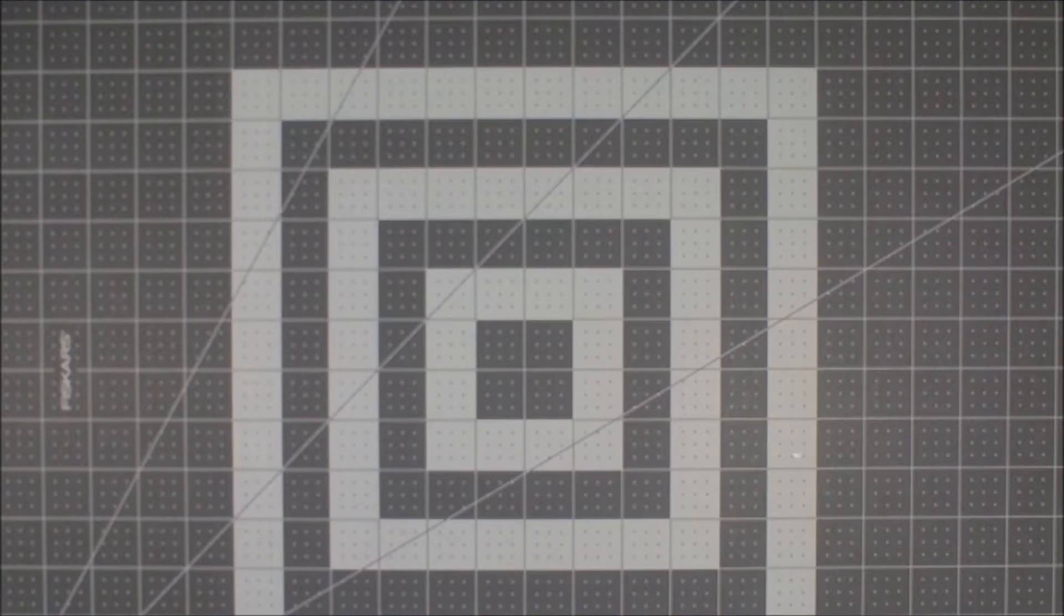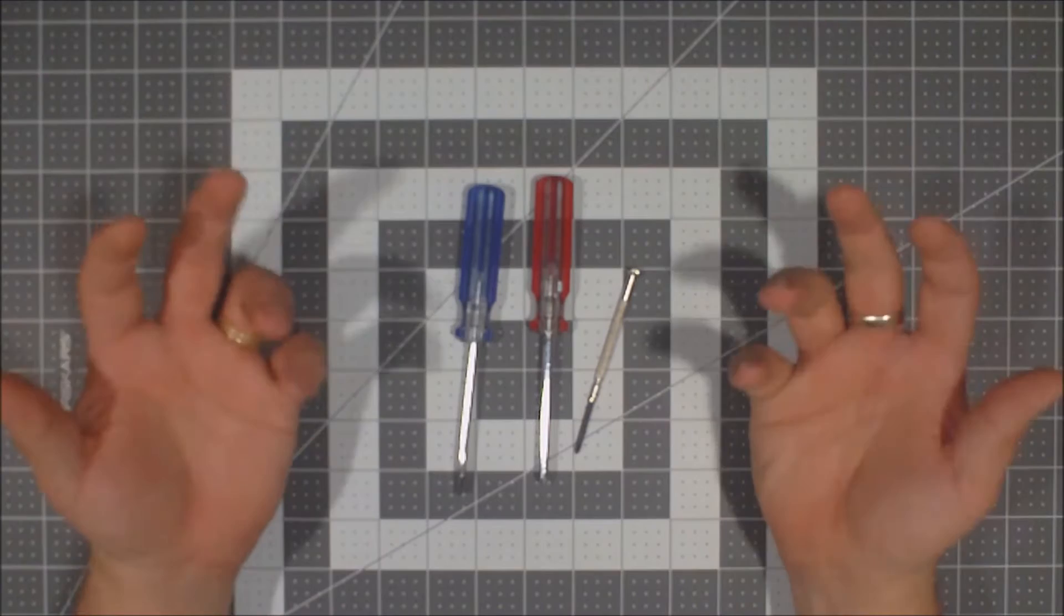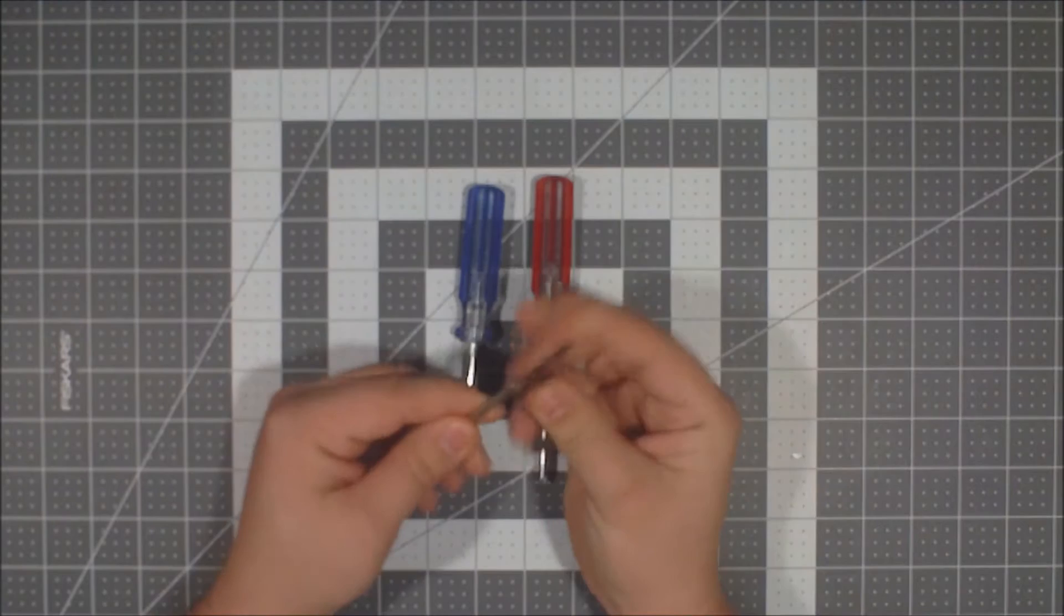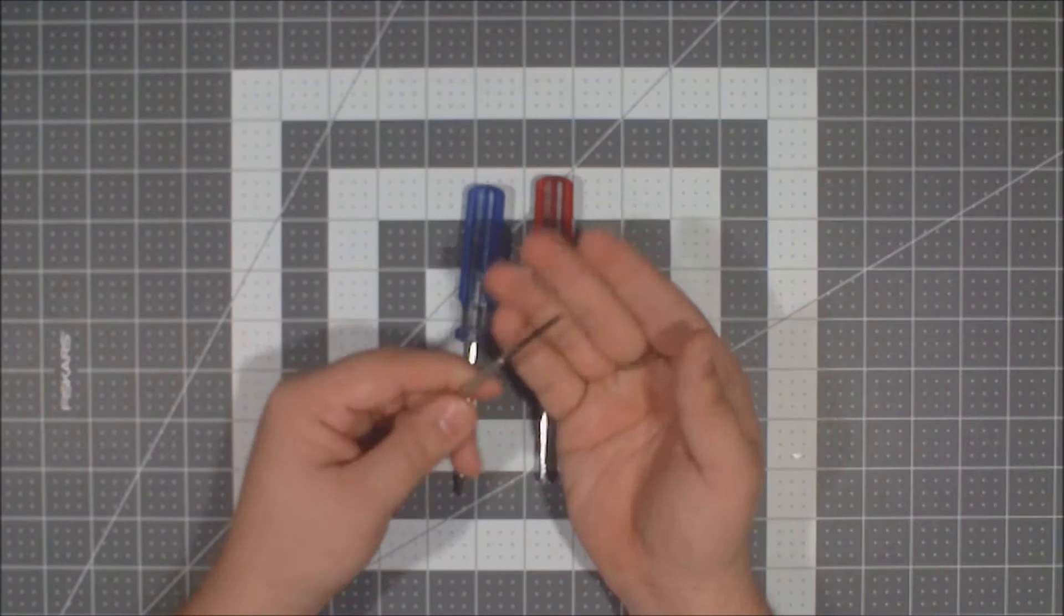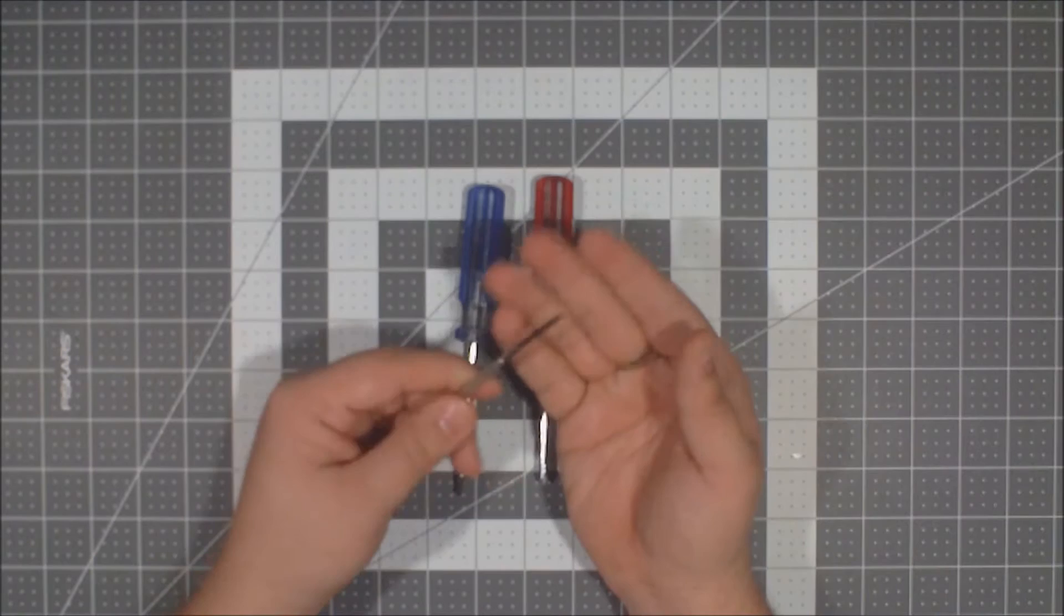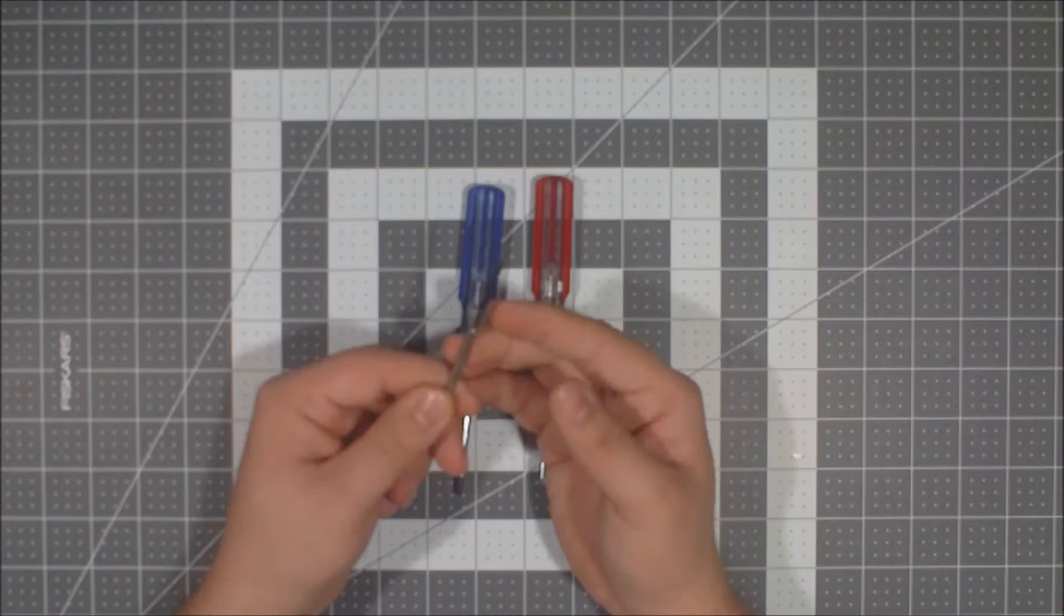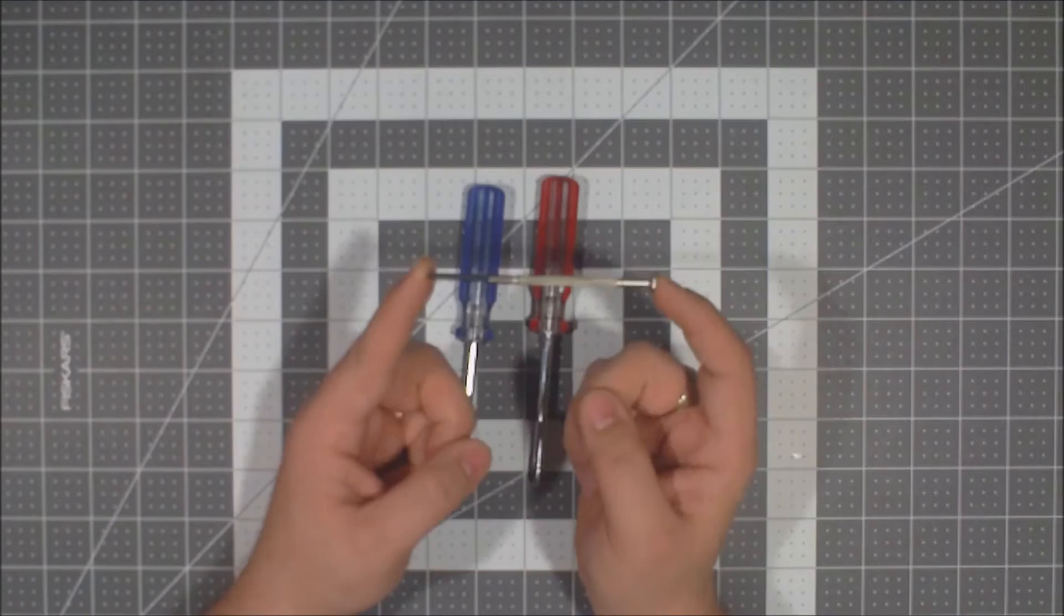Alright, so first things first, and this is the key to any start in Nerf modding, and that is screwdrivers. Now, I'm not going to sit here and throw out like 50 different sized screwdrivers you're going to need. These are the three that I basically use all the time. I have this one, which came from a small little set. I think this was like the biggest of the Phillips heads in there. This is really good for getting out just about any Nerf screw that there is.